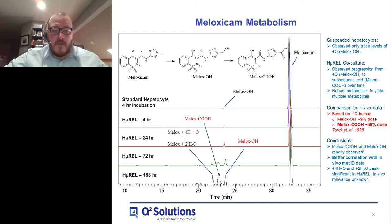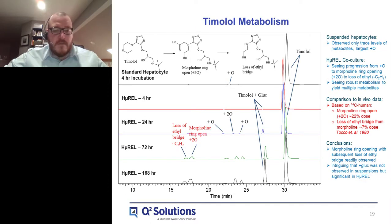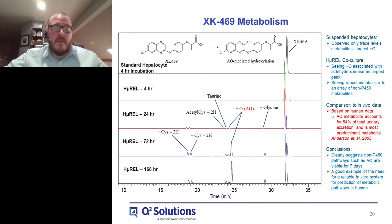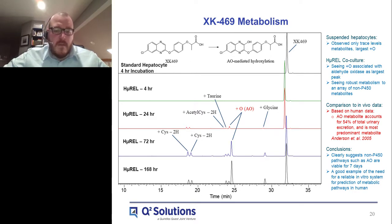Q-squared also looked at major metabolites in the Hurel system as an add-on to the clearance project. The study compared a four-hour hepatocyte suspension incubation to Hurel co-cultures out to 168 hours or seven days with no media changes. The three compounds were meloxicam, timolol, and XK469. With standard hepatocyte incubation for meloxicam, very little meloxy hydroxy is formed; in the Hurel co-culture, meloxy carboxylic acid, meloxy hydroxy, and other in vivo relevant metabolites are generated. With timolol, the timolol glucuronide metabolite, morpholine ring opening, and loss of the ethyl bridge at 72 hours are all formed. XK469 was of particular interest because its major metabolite is formed via the AO or aldehyde oxidase pathway — a non-P450 route — confirming non-P450 enzymes are expressed and active in the system.